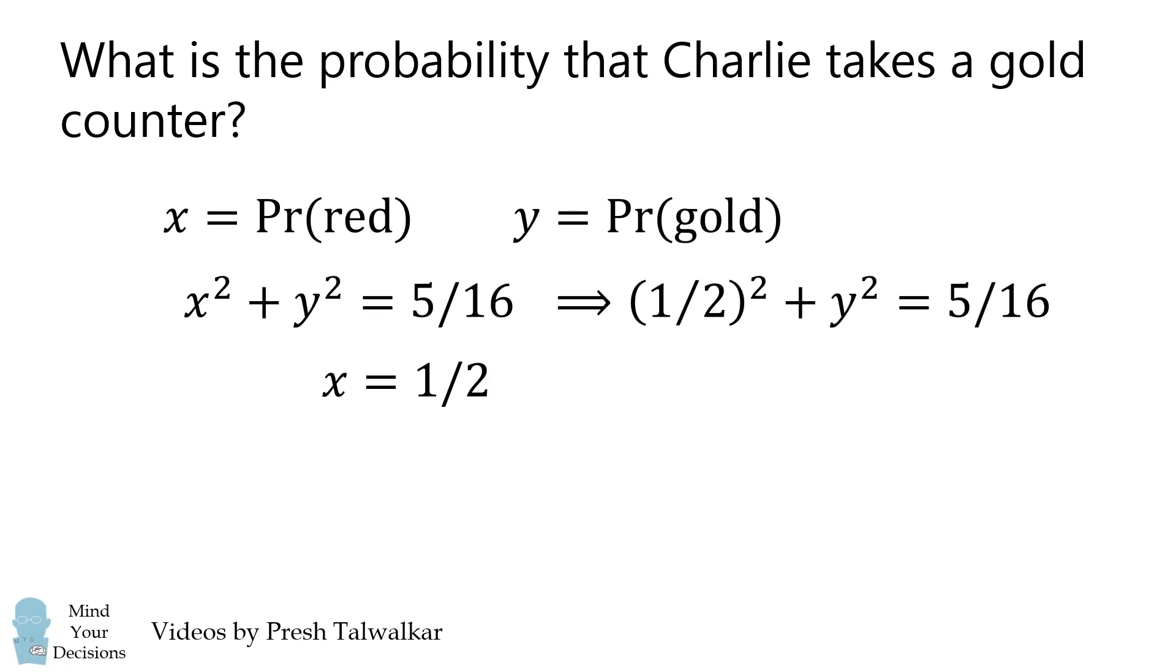Substituting in x is equal to 1 half, and then simplifying, we end up that y is equal to plus or minus 1 over 4. Since we're dealing with probability, we need y to be greater than or equal to 0. Therefore, we get the single solution that y is equal to 1 over 4.